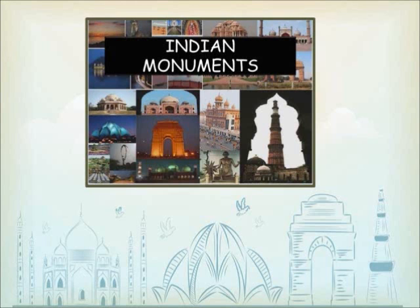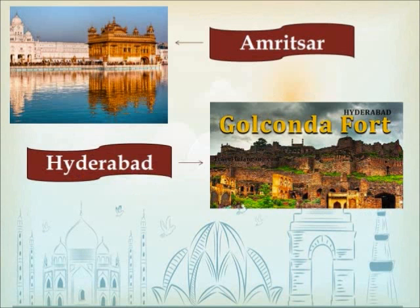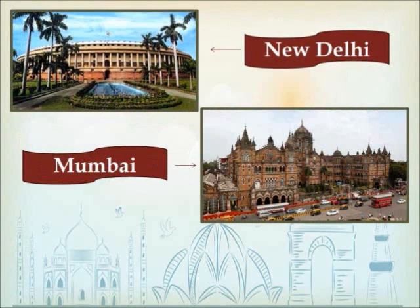Chapter 32: Monuments of India. First is the Golden Temple, which is in Amritsar. Second is Golconda Fort, which is in Hyderabad. Third is Parliament House, which is in New Delhi. Next is Chhatrapati Shivaji Terminus, which is in Mumbai.